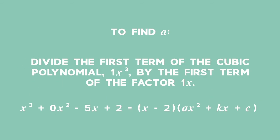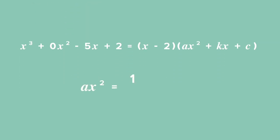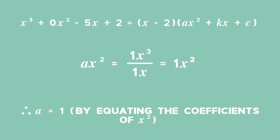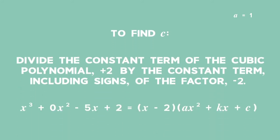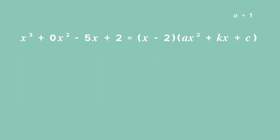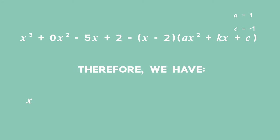To find a, divide the first term of the cubic polynomial by the first term of the factor. Thus a times x squared equals 1 times x cubed divided by 1 times x, which equals 1 times x squared. Equating coefficients of x squared, we find a equals 1. To find c, divide the constant term of the cubic polynomial by the constant term including signs of the factor: positive 2 divided by negative 2 equals negative 1. Therefore c equals negative 1. So we have x cubed plus 0 times x squared minus 5 times x plus 2 equals x minus 2 in brackets times x squared plus k times x minus 1 in brackets.